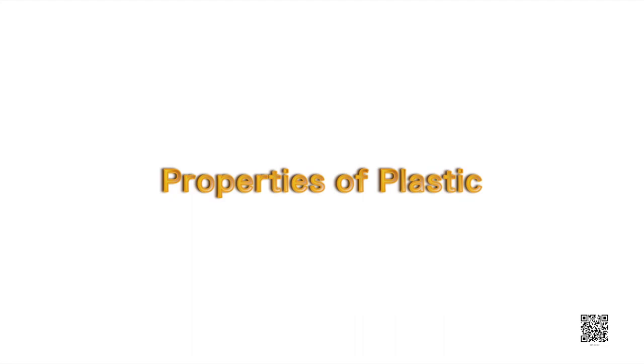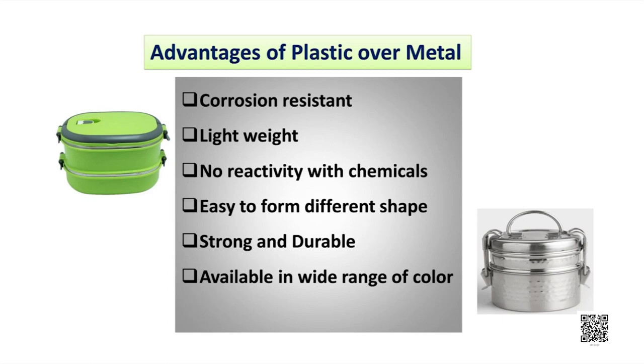What makes plastic so useful that we use it so widely? We use plastic in every mode of life — for storing food items, water, milk, spices, etc. Comparing a plastic container and a metal container: metals like iron get rusted when exposed to moisture and air, but plastic does not react with water and is not corroded easily. This property makes plastic useful for storing various kinds of materials including chemicals and medicines.